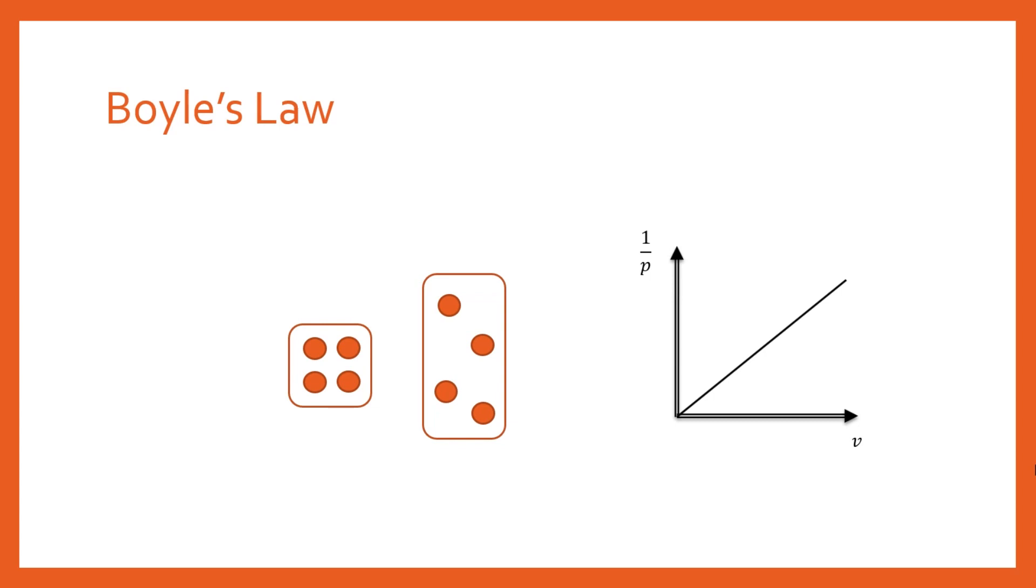So you can imagine that if you're not changing the number of molecules and you're not changing the temperature, that doubling the size of the container, so doubling the volume, is going to half the pressure. And that's exactly what Boyle found. And so he said that the volume of a gas is directly proportional to one over the pressure. That's the first law.